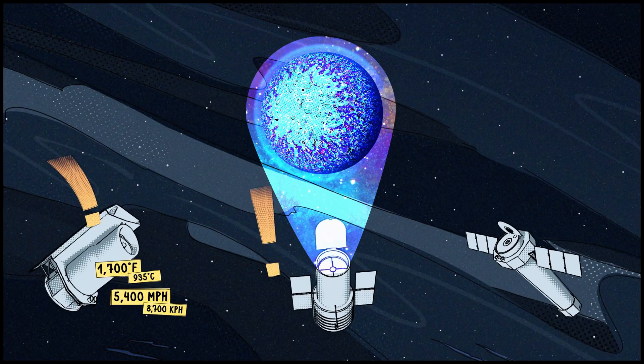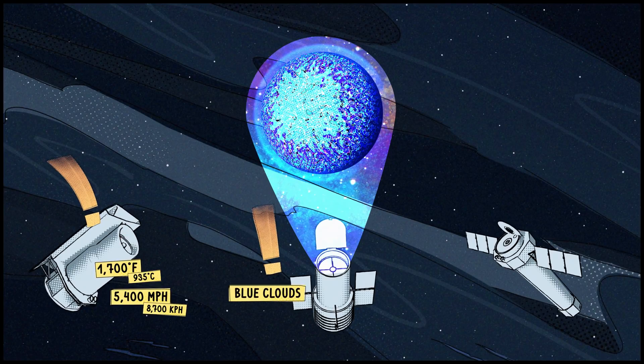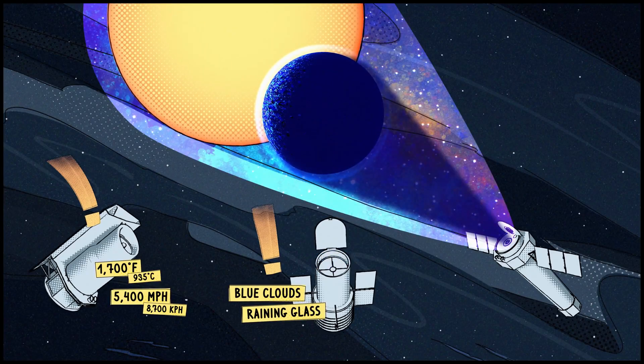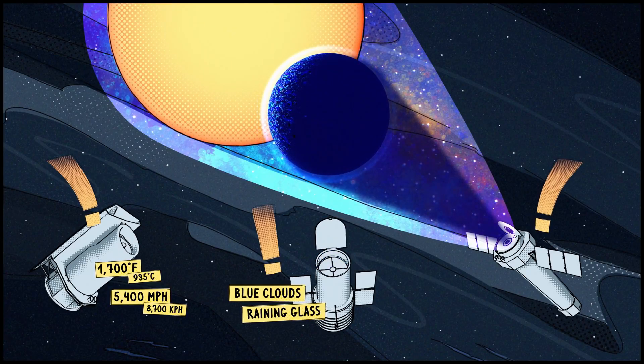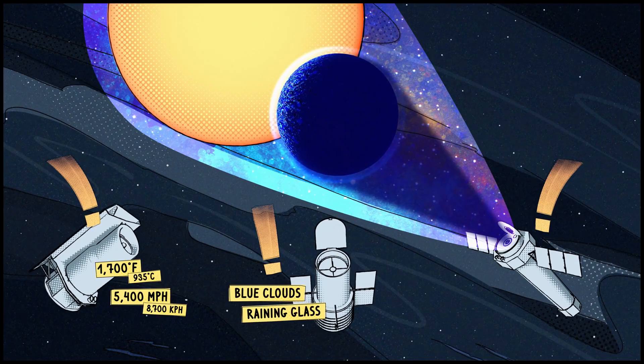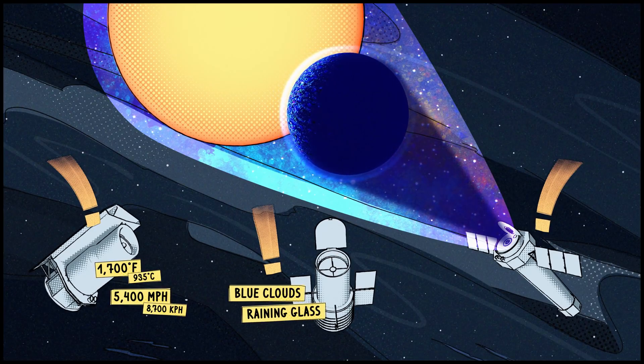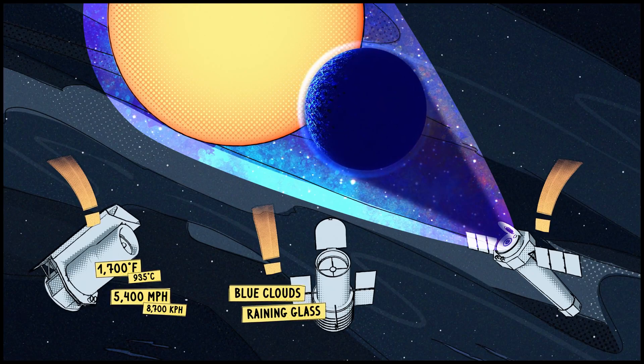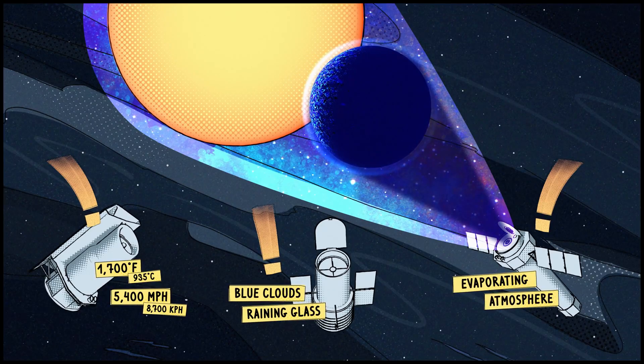Hubble discovered that the planet's clouds are deep blue, due to the raining glass or silicates. And Chandra observed its star in X-rays, watching the planet's shadow as it passed in front of the star, a much larger shadow than previously thought, because huge amounts of the planet's atmosphere are evaporating into space.